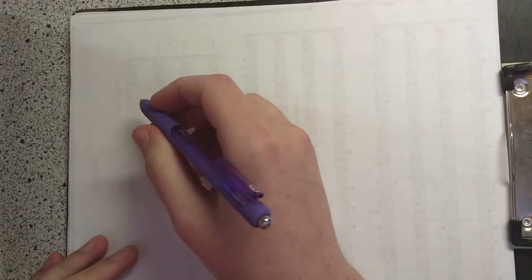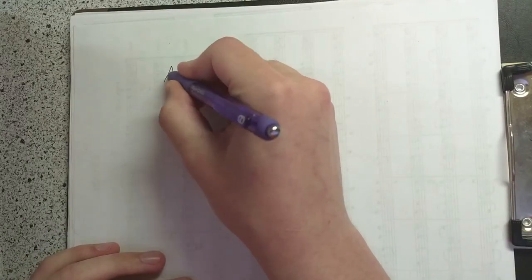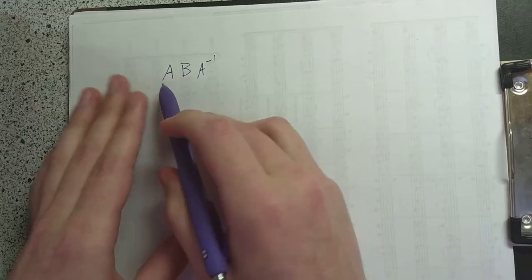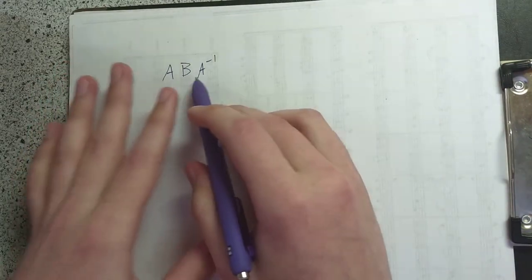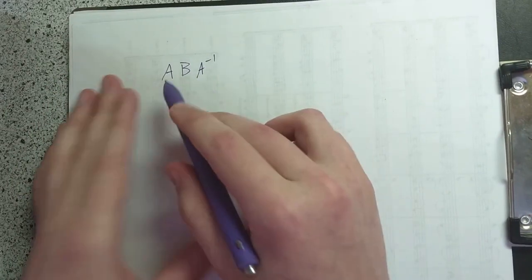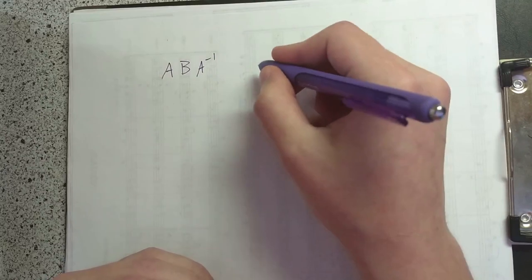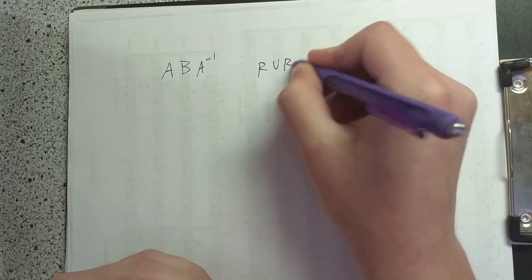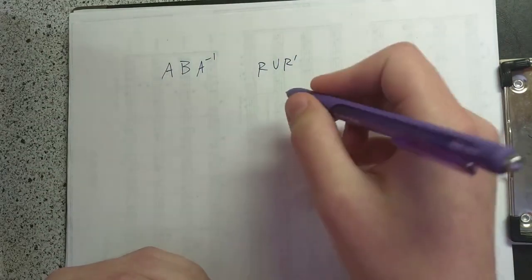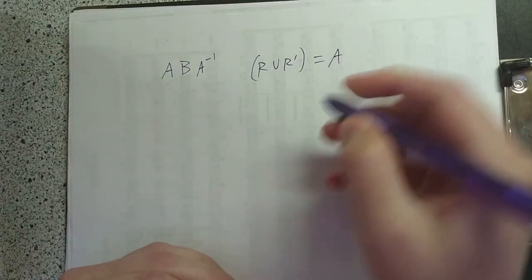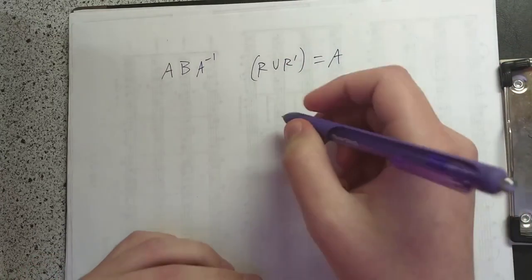I'm going to start off by talking about conjugates first. A conjugate is any algorithm that has the form A, B, A inverse. This means you do a sequence of moves A, then a sequence of moves B, and then you do the inverse of the sequence of moves A. The sequence could just be a single move, so we could have something like R U R prime, or we could take that to be one sequence and then have some other sequence in the middle.